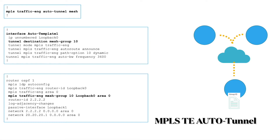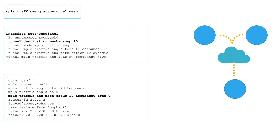So let's quickly see the configuration. In order to enable auto template mesh, first you configure the command: MPLS traffic engineering auto tunnel mesh. Then you define the auto template, where one key thing to notice is the tunnel destination mesh group — here I've given the group number as 10. Similarly in the OSPF process, you give mesh-group-specific configuration and attach it to one of the areas. That's all there is in the configuration. Let's see the demo now.